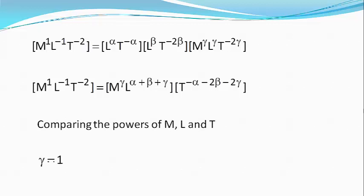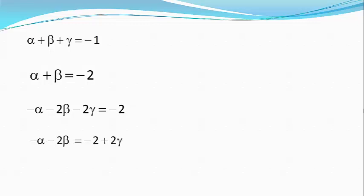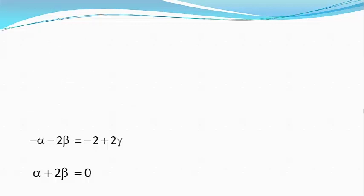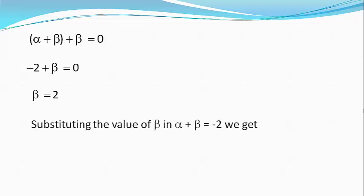Alpha plus beta plus gamma equals minus 1, or alpha plus beta equals minus 2. And minus alpha minus 2 beta minus 2 gamma equals minus 2. Since gamma equals 1, we get minus alpha minus 2 beta equals 0, or alpha plus 2 beta equals 0. Since alpha plus beta equals minus 2, beta equals 2. Substituting the value of beta in alpha plus beta equals minus 2, we get alpha equals minus 4.